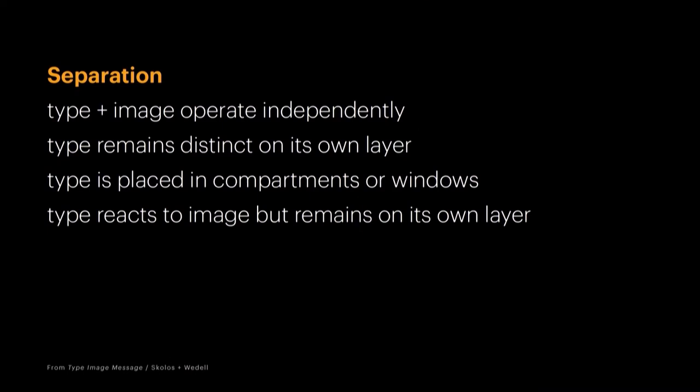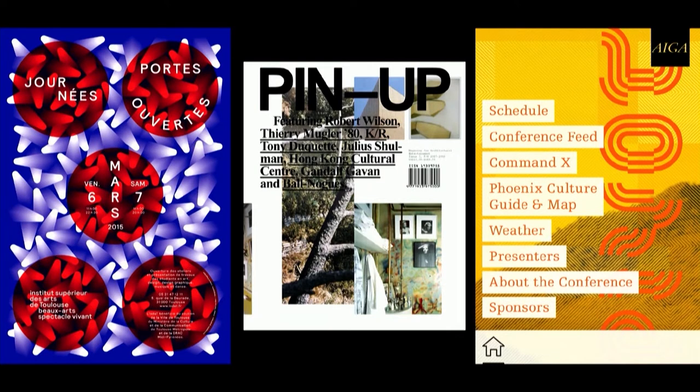One of the first ones is separation. Separation is where the type and image just operate independently. This is an hour-long lecture for me, but I'm condensing it into about two minutes. Type remains on its own layer. Type is placed in compartments or windows, which is super useful if you have a complicated background, or especially in mobile or screen-based type. The type can react to an image but remain on its own layer.